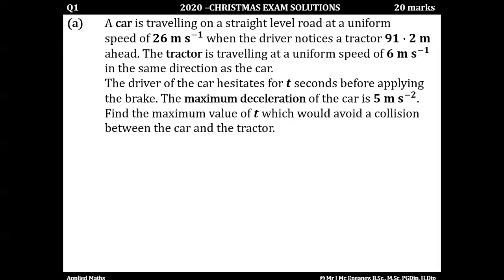Question one, part eight - this was the 2020 exam paper. We're told that a car is traveling on a straight road at a uniform speed of 26 meters per second when the driver notices a tractor 91.2 meters ahead. The tractor is traveling at a uniform speed of 6 meters per second in the same direction. The driver hesitates for T seconds before applying the brakes, with maximum deceleration of 5 meters per second squared. We want to find the maximum value of T to avoid a collision.